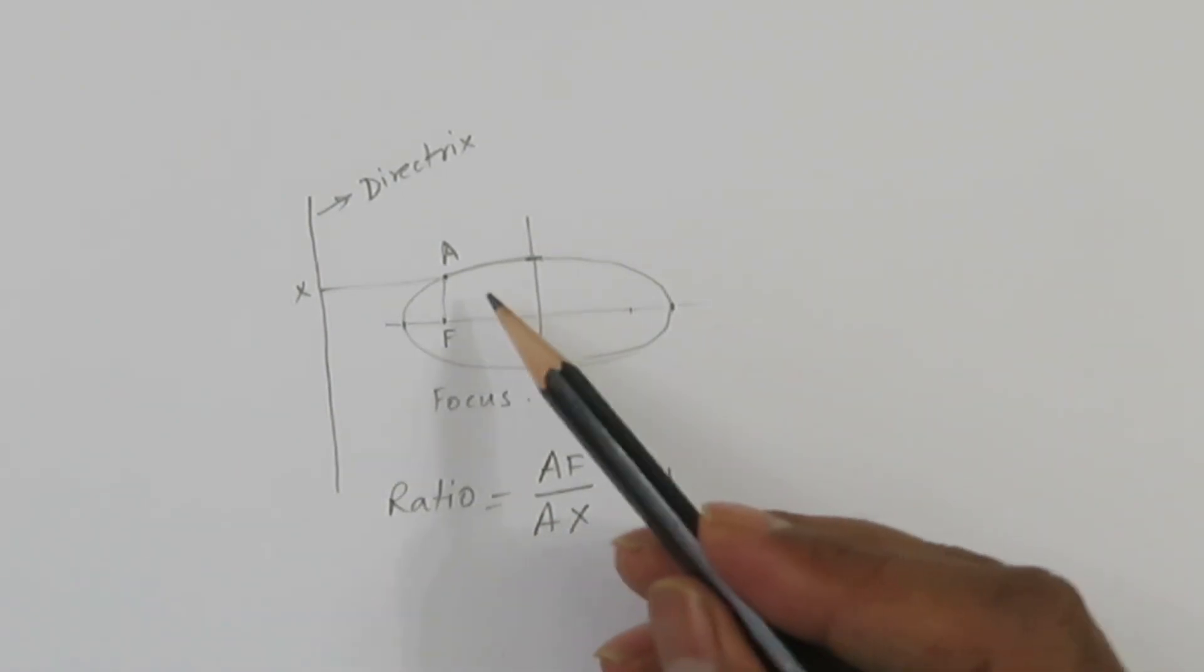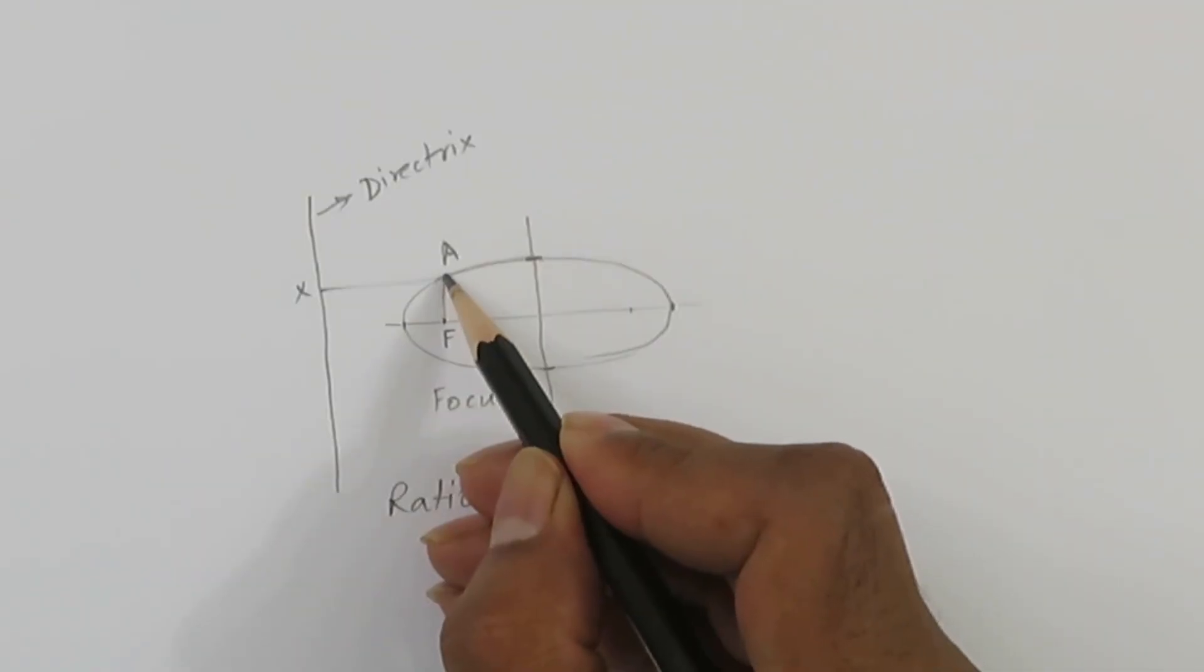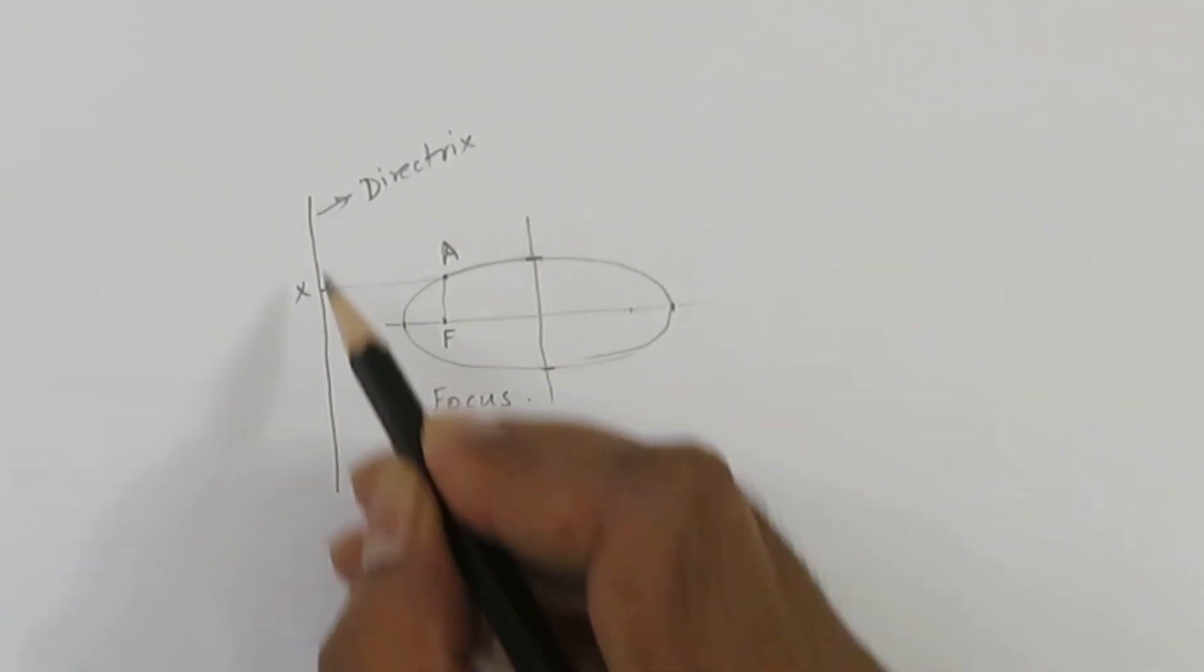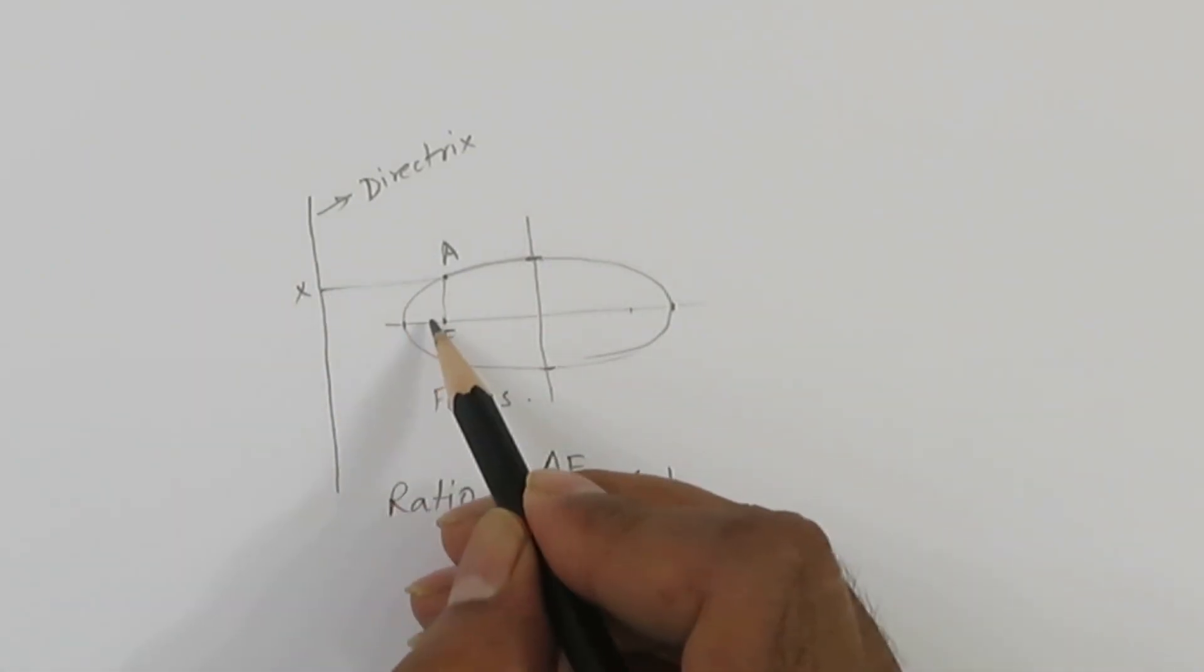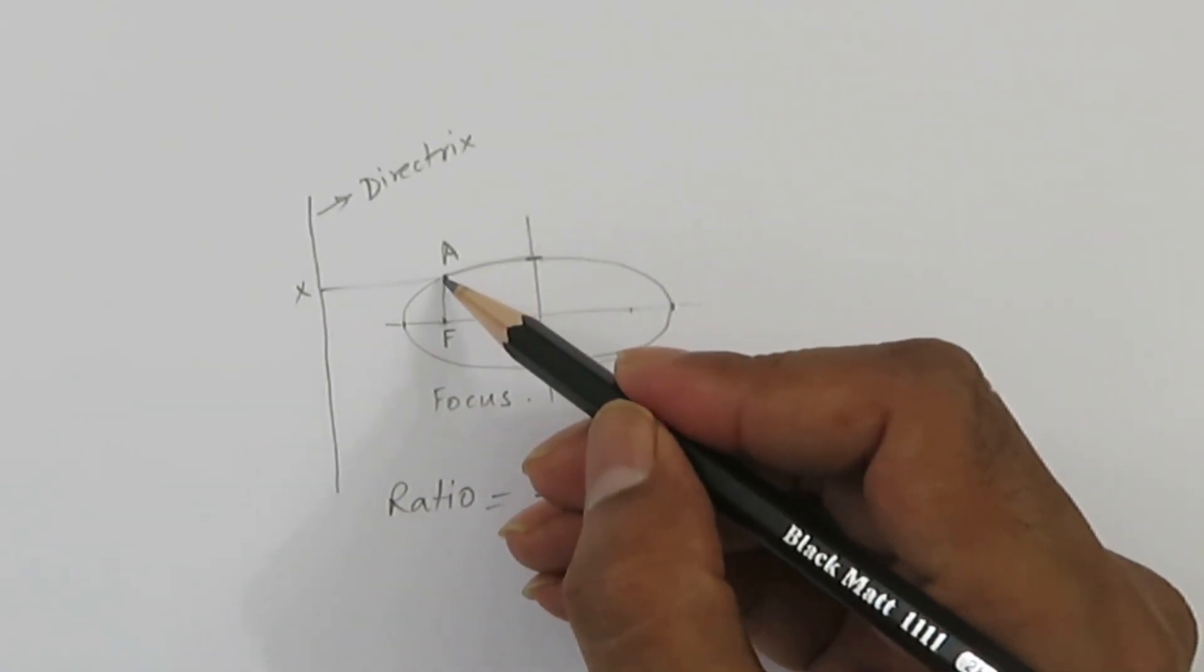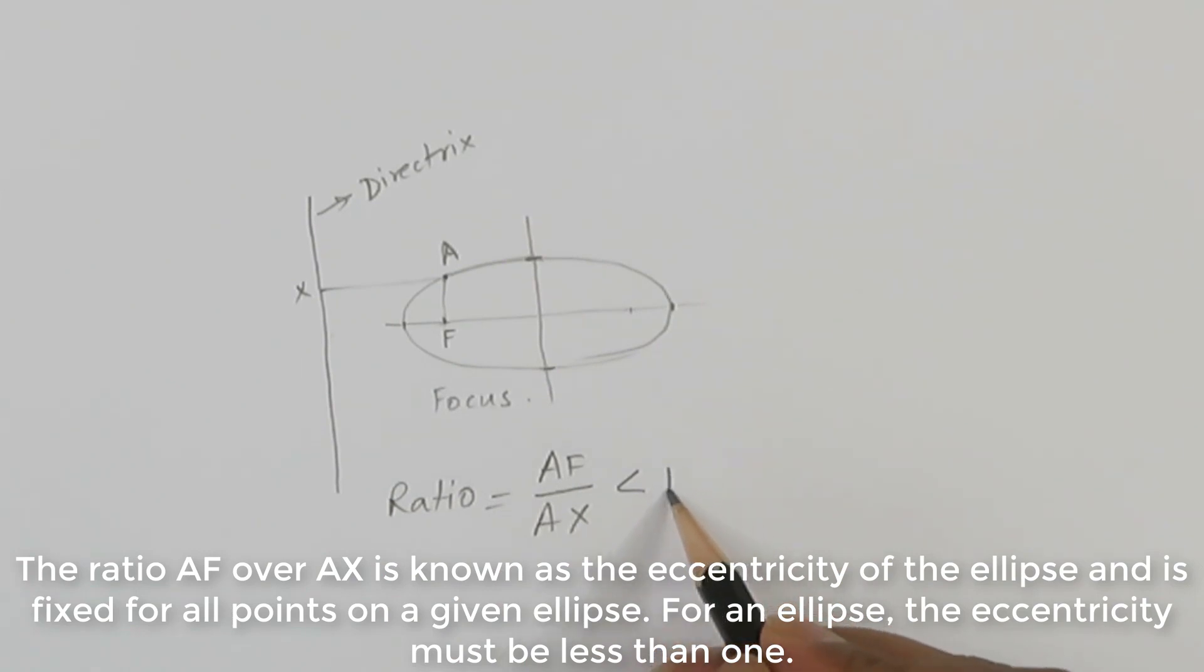This is the property of an ellipse that any point, the distance of this point from focus and directrix which is a line at certain distance from the focus. This distance is also fixed. The ratio of AF over AX must be less than 1. This is the property.